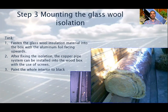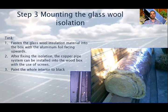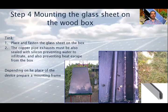The glass wool can be fixed with glue or using special clips. After fixing the insulation, the copper pipe system can be installed into the wooden box. Take care not to flatten the insulation — use some spacer or simply screws. After that, paint the whole interior to black using heat-resistant paint. After all the inner components are mounted together and the paint is dried, comes step 4, which is mounting the glass sheet on the wooden box.